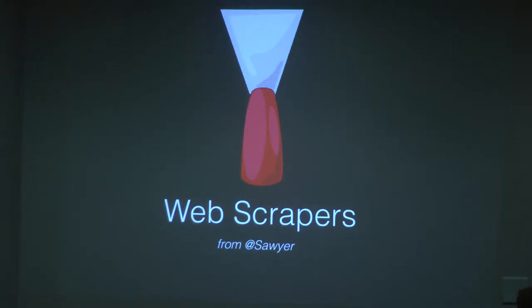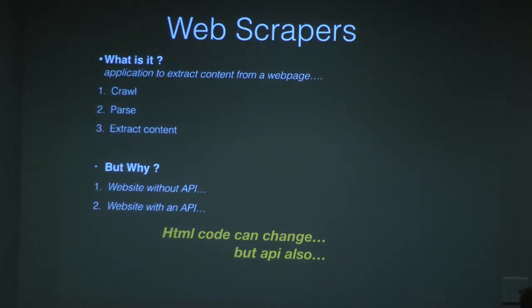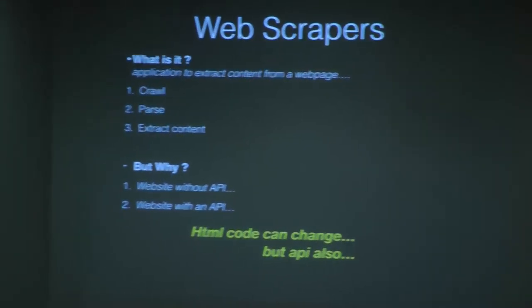One of the first talks I attended was about web scrapers from Sawyer, who is pretty well known in the Perl community. A web scraper is a way to extract content from a web page or web service — you extract the content, parse it, and display your piece of content. Why do you need a web scraper? One main reason is that websites live and change permanently, and even if websites provide an API, the API might be desynchronized regarding the contents.